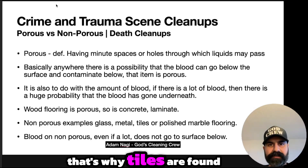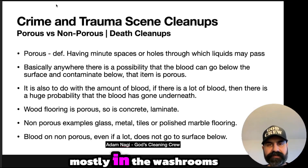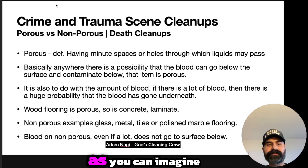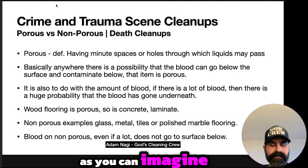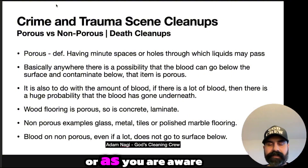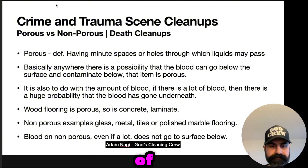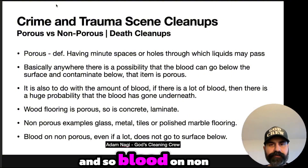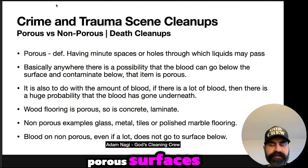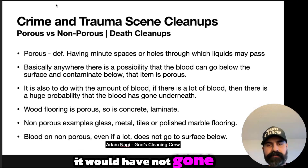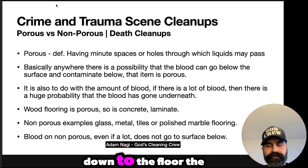Non-porous examples are glass, metal, tiles, and polished marble flooring. Tiles are a very good example — that's why tiles are found mostly in washrooms. Blood on non-porous surfaces, even if there's a lot of it, would not have gone down to the subfloor below.